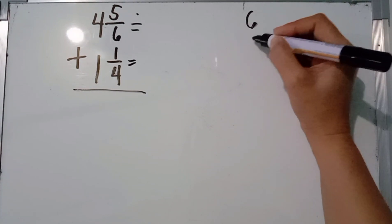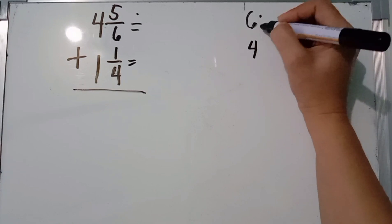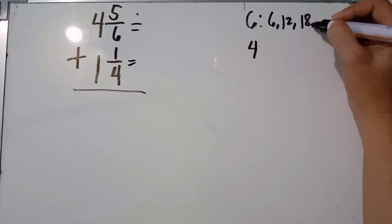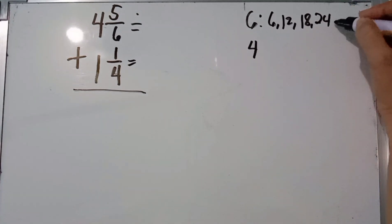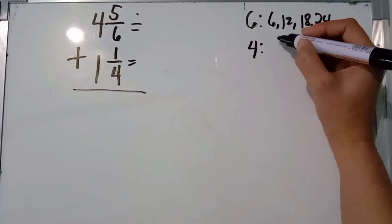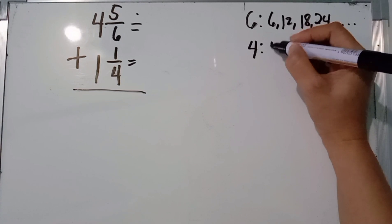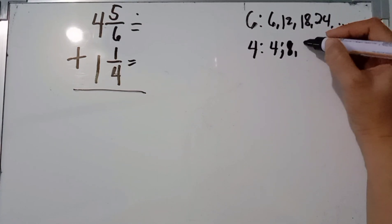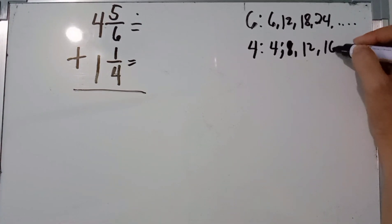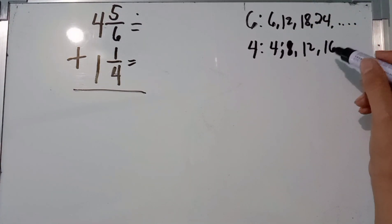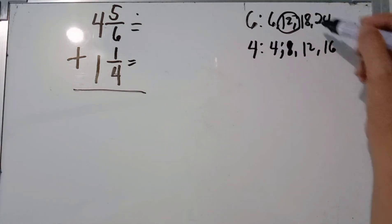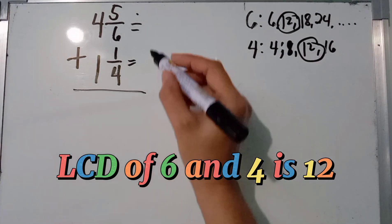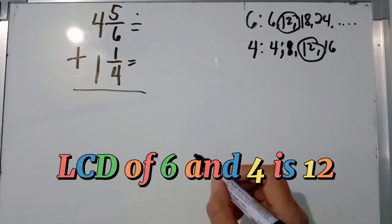What are the multiples of 6 and 4? The multiples of 6 are: 6, 12, 18, 24, and so on. The multiples of 4 are: 4, 8, 12, 16, and so on. We can see they have a common multiple which is 12. Therefore, the LCD or LCM of 6 and 4 is 12.